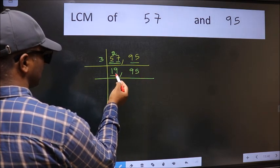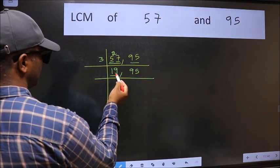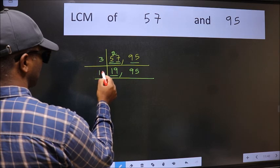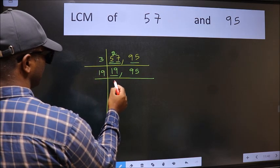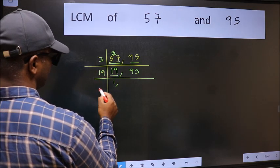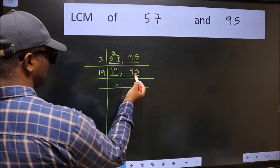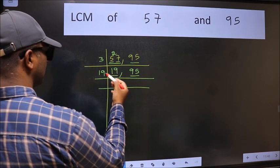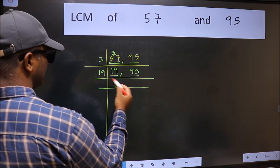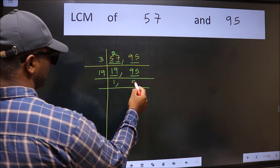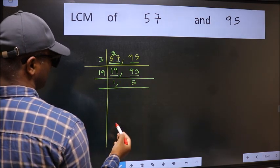Now here we have 19. 19 is a prime number, so 19 once is 19. The other number 95 — when do we get 95 in the 19 table? 19 fives are 95.